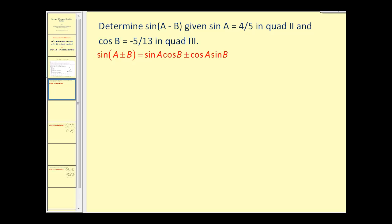We want to determine the sine of (a - b), given that sine(a) equals 4/5 with angle a in the second quadrant, and cosine(b) equals -5/13 with angle b in the third quadrant. Let's go ahead and sketch these angles in standard position.